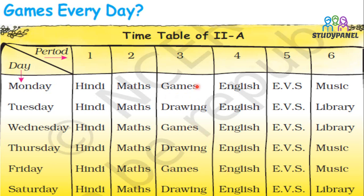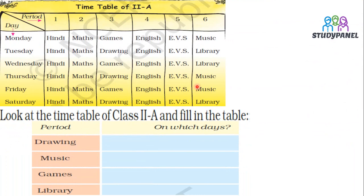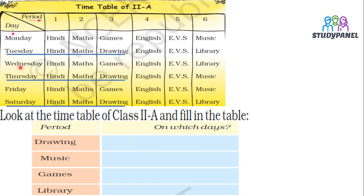Let us answer some questions on the basis of this timetable. We have to fill in a table: look at the timetable and fill in which day each period comes. For Drawing: drawing is on Tuesday, Thursday, and Saturday — so we write Tuesday, Thursday, and Saturday. For Music: music is on Monday, Thursday, and Friday — so we write Monday, Thursday, and Friday.